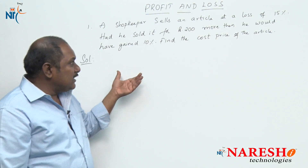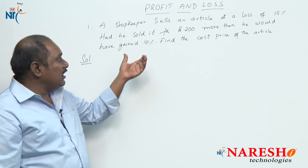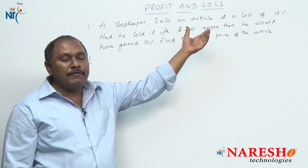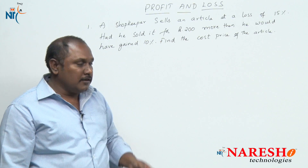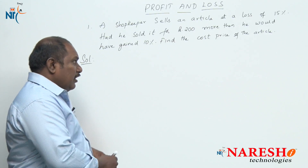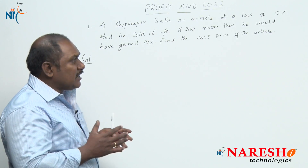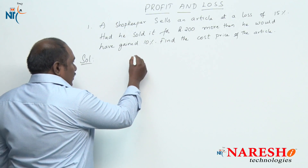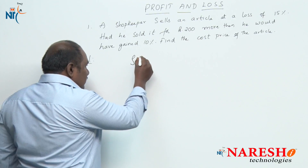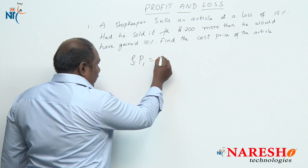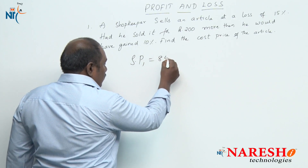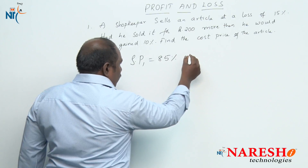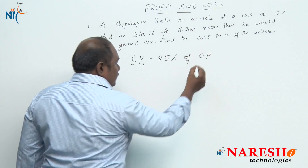Here, the shopkeeper is initially selling the article at a loss of 15 percent. So if a shopkeeper sells at a loss of 15 percent, the initial selling price should be equal to 85 percent of cost price.